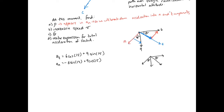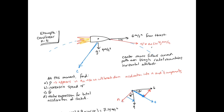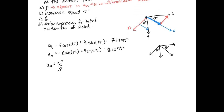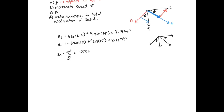Now we have the full equations for tangential and normal acceleration. Calculating these out: a_t equals 7.14 meters per second squared, and a_n equals 8.12 meters per second squared. To find the radius of curvature, we use a_n equals v squared over rho. Converting the speed from kilometers per hour gives 5,555 meters per second. So: 5,555 squared divided by rho equals 8.12, which gives a radius of curvature of 4.32 times 10 to the 6 meters — pretty large.